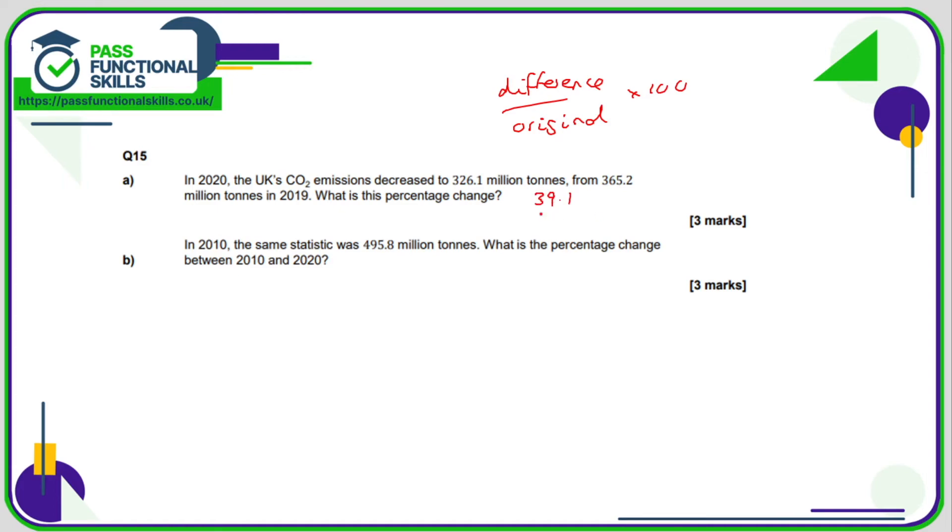So that's our calculation. 39.1 divided by 365.2 multiplied by 100, and that comes out as 10.71%.